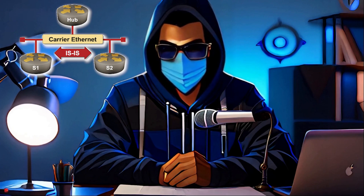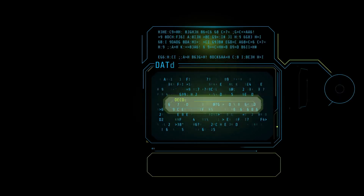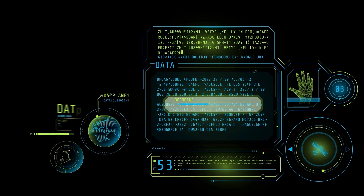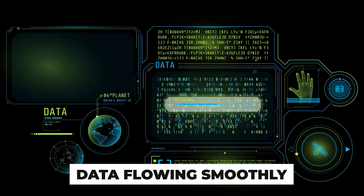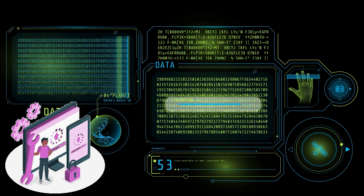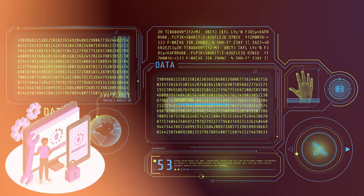IS-IS, or Intermediate System to Intermediate System, is another routing protocol — OSPF's cousin. It's the quiet, efficient type, often used by large service providers to keep data flowing smoothly. Misconfigurations here can lead to data getting lost in transit.